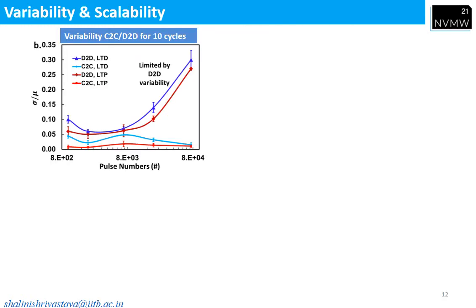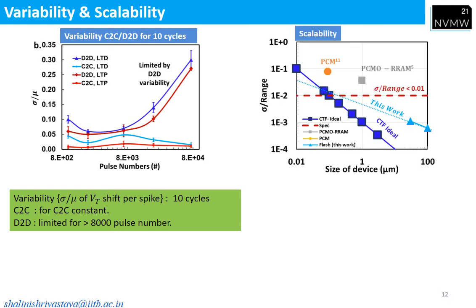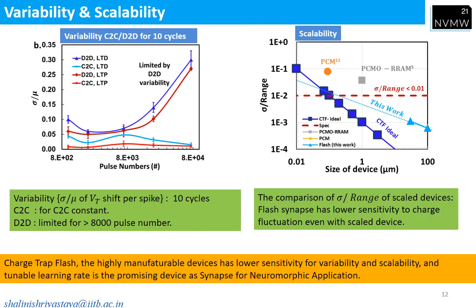The study of variability is done for 10 cycles. Cycle-to-cycle variability is constant. The synaptic behavior is limited by device-to-device variability, and that only occurs beyond 8000 pulses. The variability of the scaled device is also studied and found to be less sensitive compared to the state of the art.